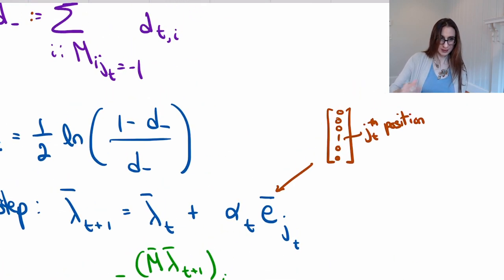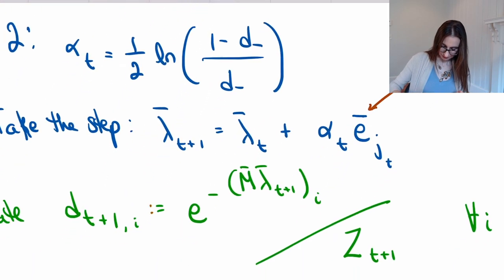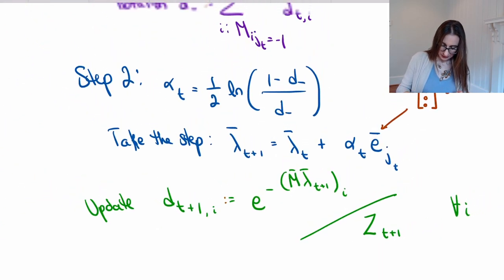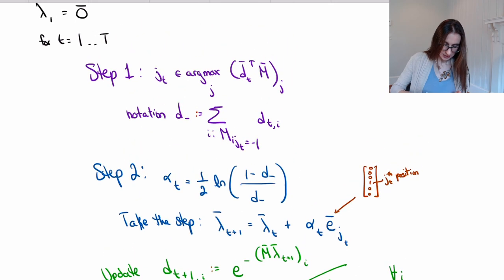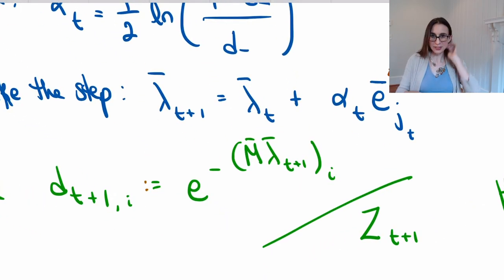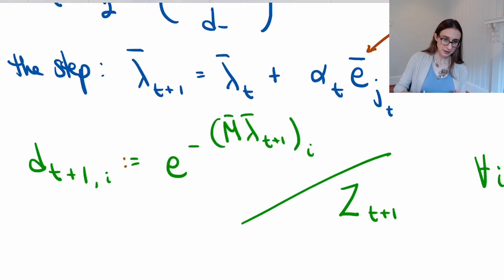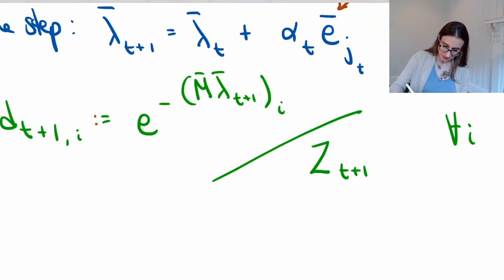So lambda_t+1 equals lambda_t plus a step of size alpha_t in the direction of j_t. This notation means a vector of zeros with a 1 just in that j_t-th position there. That's essentially saying just look at the j-th component of lambda_t and add alpha_t to it. Now I've got to update the weight vector.